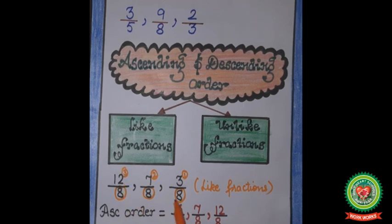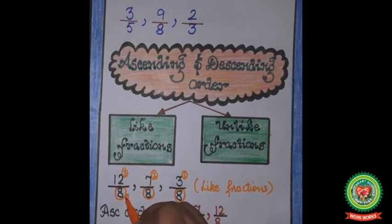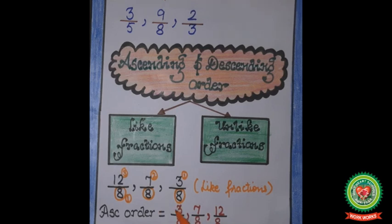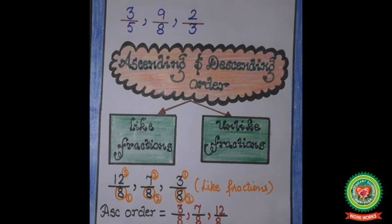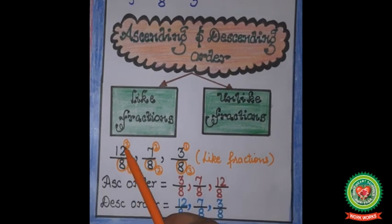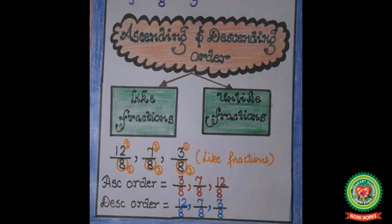For descending order, we arrange from greater to smaller. Comparing numerators, 12 is the greatest, so 12 upon 8 is number 1. Between 7 upon 8 and 3 upon 8, 7 is greater, so 7 upon 8 is number 2, and 3 upon 8 is number 3. Descending order is: 12 upon 8, 7 upon 8, 3 upon 8.